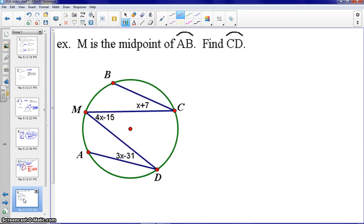Next example. Here we have M as the midpoint of arc AB. So we can mark arc AM and arc MB are going to be congruent. Therefore, we know the inscribed angle C and the inscribed angle D would be congruent. And we can set X plus 7 equal to 3X minus 31. And if we solve for X, we will get X equal to 19.